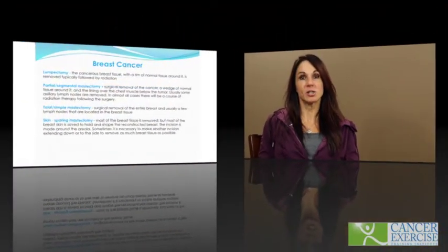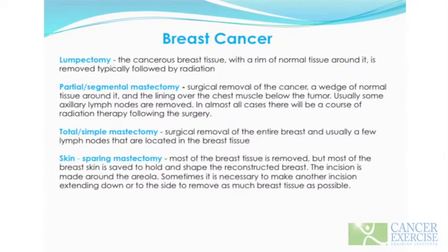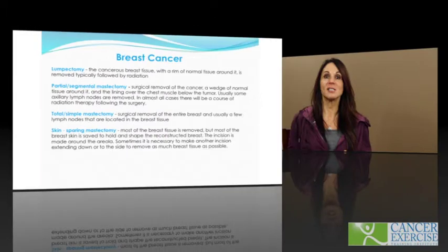With breast cancer we're going to start with the simplest of surgical procedures and move on to the more aggressive. A lumpectomy is when the cancerous breast tissue along with a rim of normal tissue, or a clean or clear margin, is removed, and then it's typically followed by radiation to wipe out any cancerous cells that are left behind.